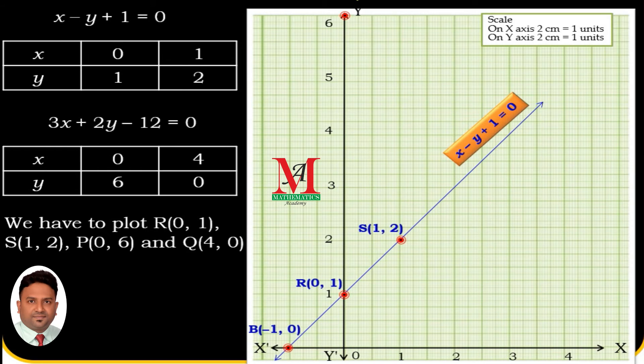And the next point is 4, 0. You will see on the x-axis Q(4,0). Now, join these red dots. The point where these two lines intersect is 2, 3, and that is point A, which is not in the table. That is the solution of this equation also. The equation is 3x plus 2y minus 12 equals 0.